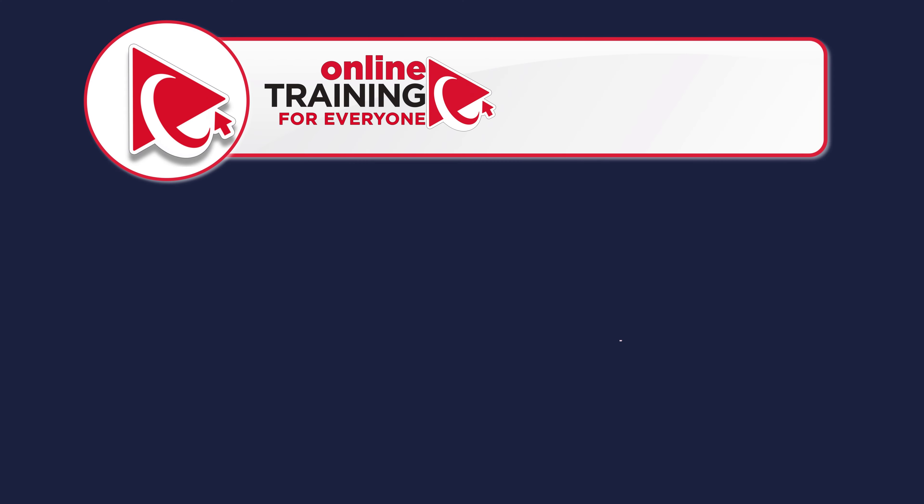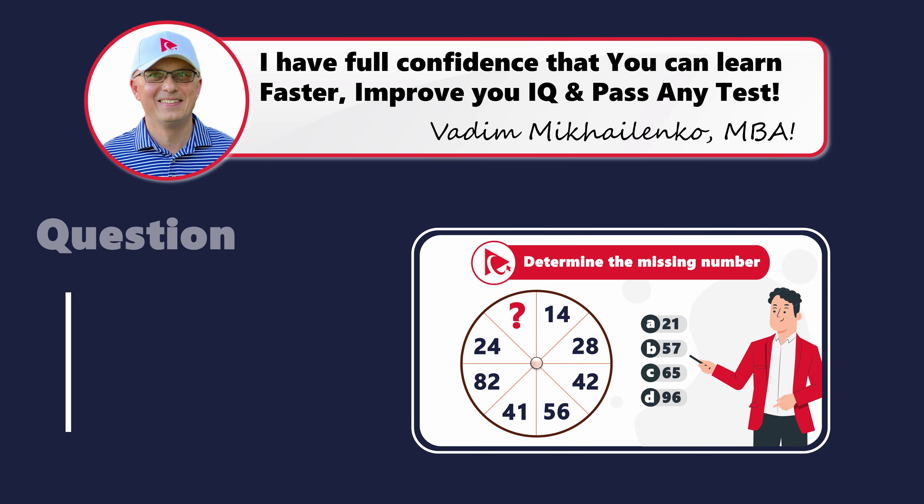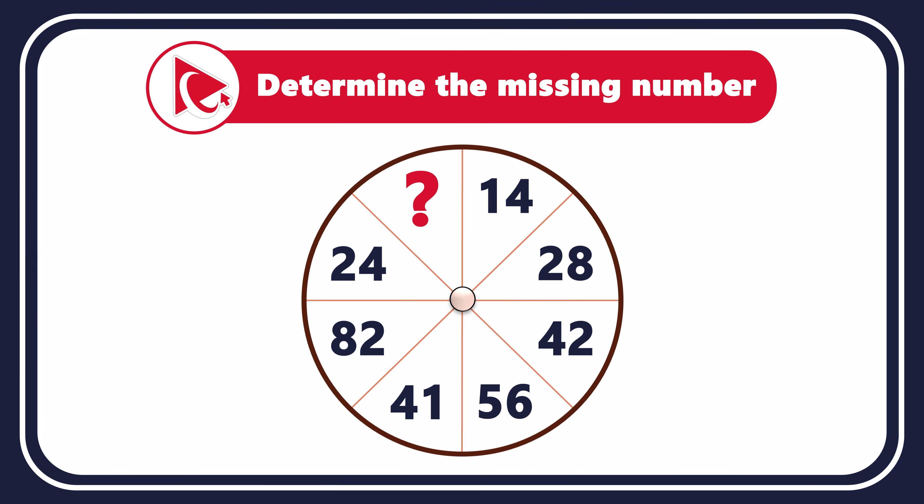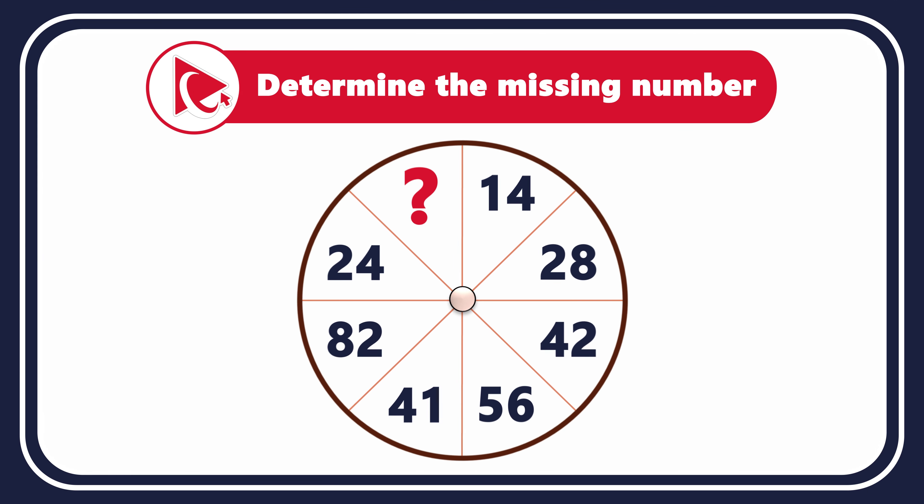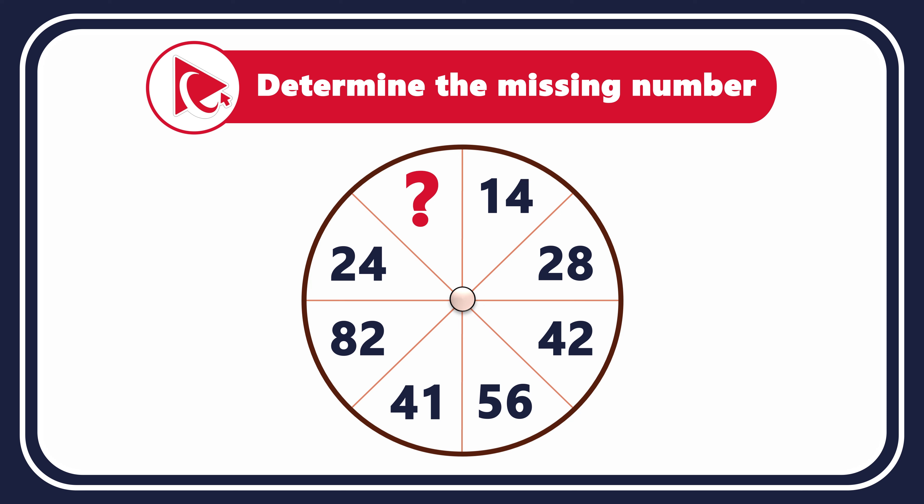Prepare to tackle this tricky question, designed not just to test your mental math abilities, but also to improve your critical thinking skills. You are presented with a circle, which is broken down into 8 equal parts. Each part has a number, and the numbers are 14, 28, 42, 56, 41, 82, 24, and then comes the missing number.